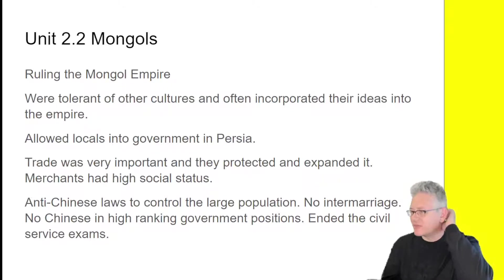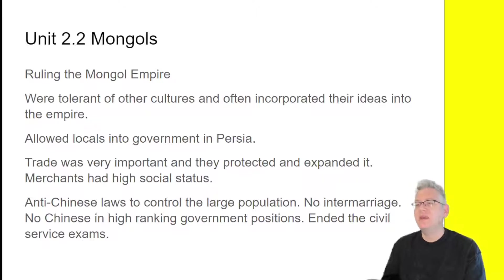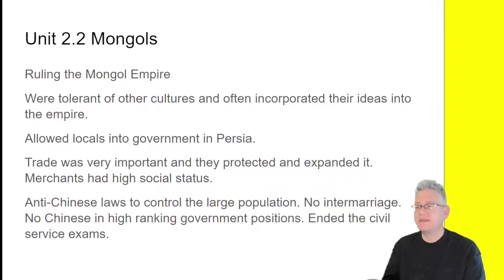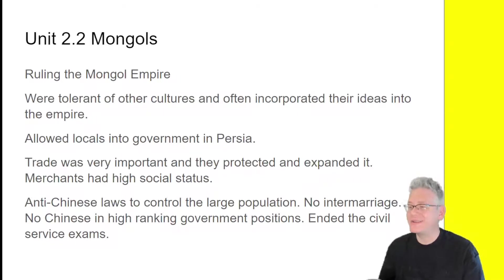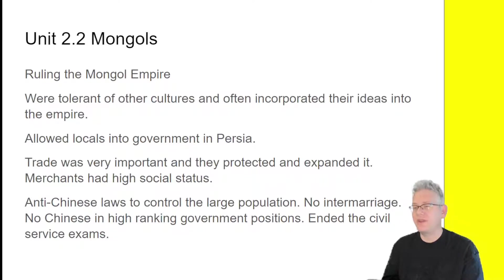One unusual thing they did was institute a number of anti-Chinese laws. The reason is that there were a lot of Chinese and very few Mongols, so when they conquered Chinese territories they worried about being overwhelmed — which did actually happen in many places. In Persia, for example, they ended up converting to Islam and within a few hundred years were not really recognizably Mongols anymore. So they said: no intermarriage with ethnic Chinese, no Chinese in high-ranking government positions, and they ended the civil service exams. While we talk about tolerance of other cultures, it has limitations. These aren't peaceful hippies — they're people trying to conquer and maintain a territory. They're very practical: what do they need to do to win and expand?